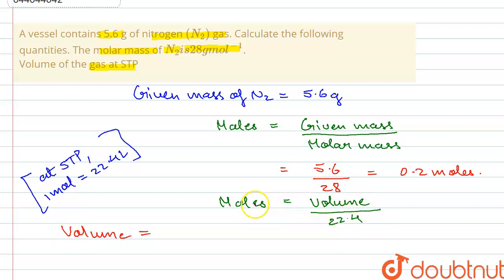This 22.4 goes to this side and gets multiplied with the number of moles. And we know the number of moles is 0.2 moles. So if 22.4 is multiplied with 0.2, then we get 4.48 liters. So that is the volume of the gas at STP. Thank you.